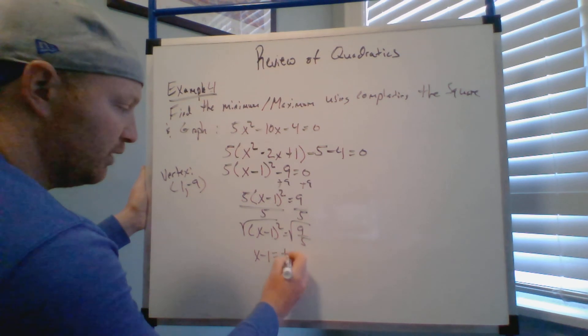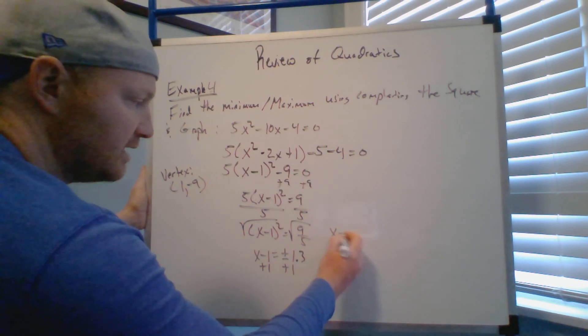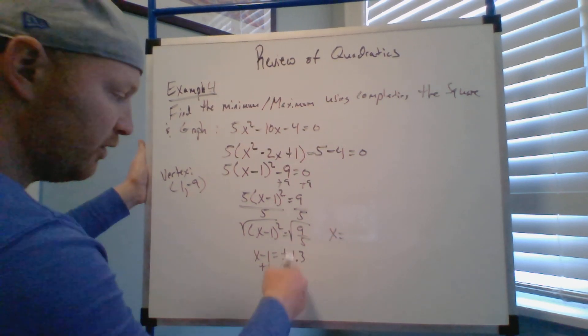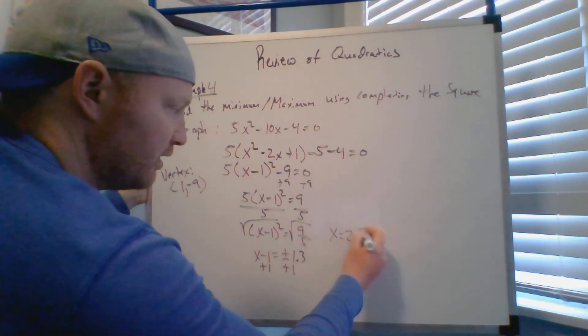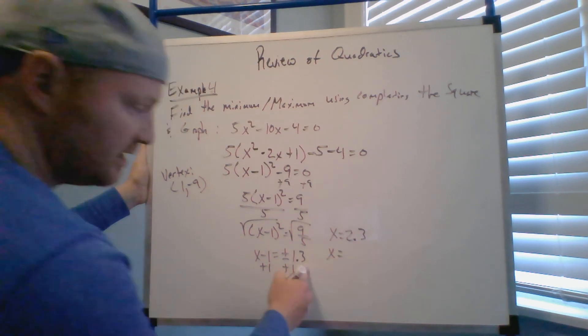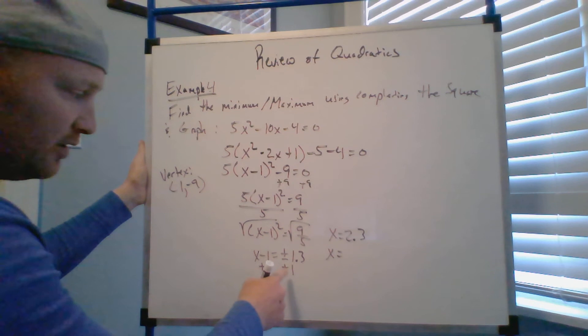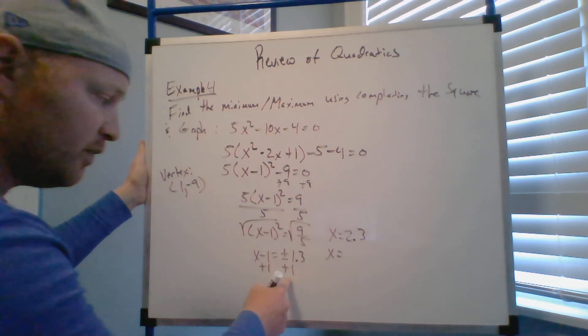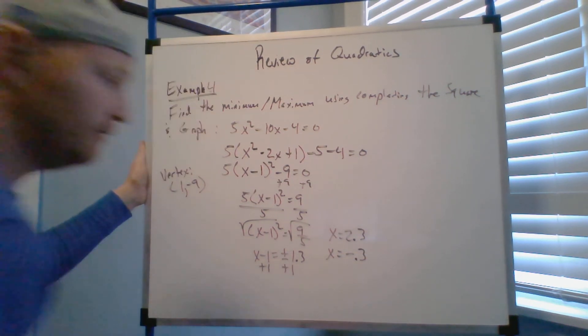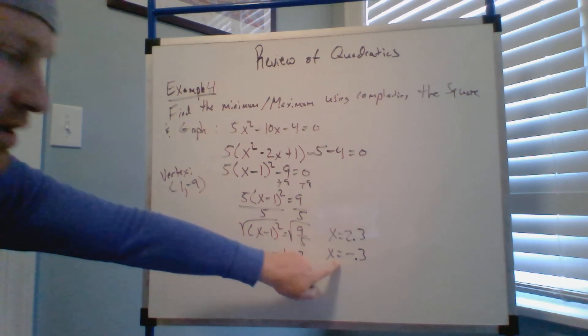So I'm going to have an answer of x minus one is equal to plus or minus 1.3. I'm going to add one to both sides. My x-intercepts are either 1.3 plus 1, which is 2.3, or x, this is an estimated answer, I'm going to do negative 1.3 plus 1, which is negative 0.3. So there are my x-intercepts, my zeros, my solutions.